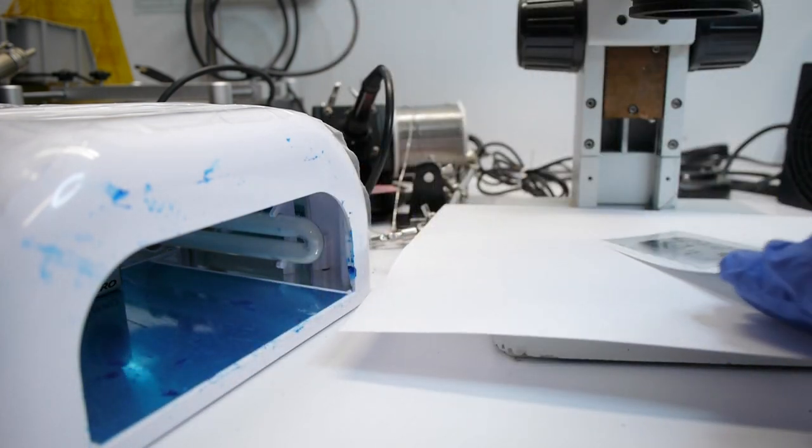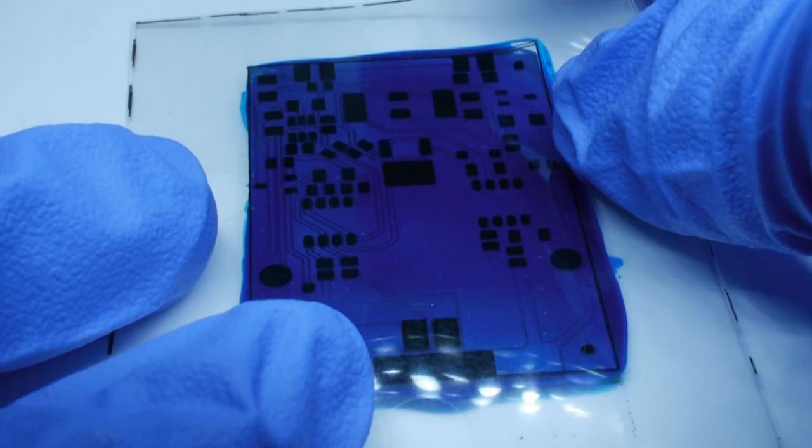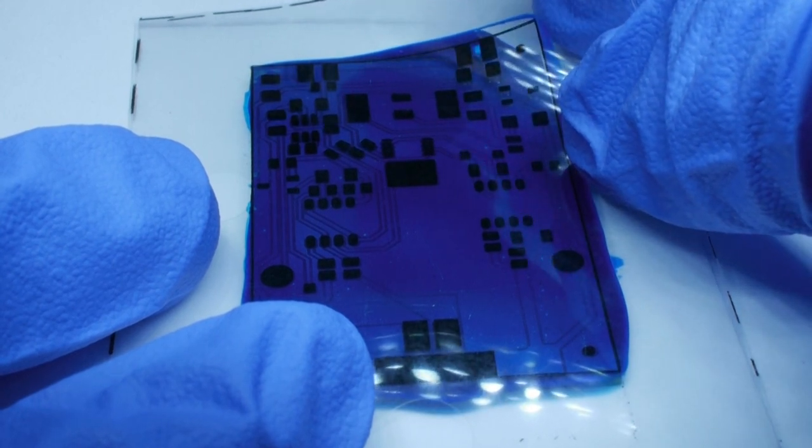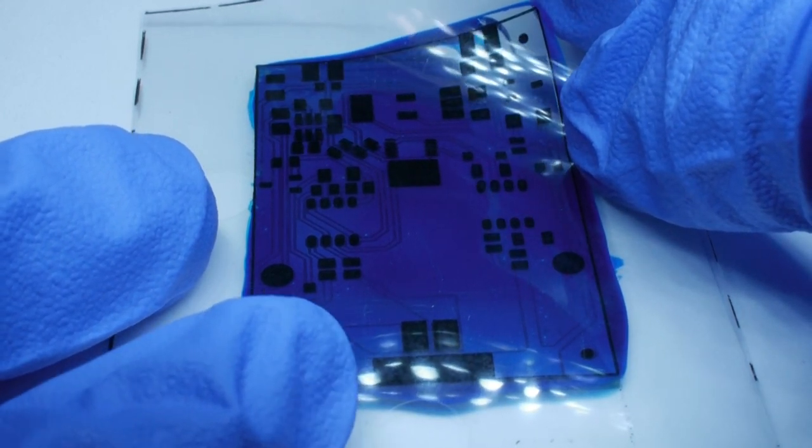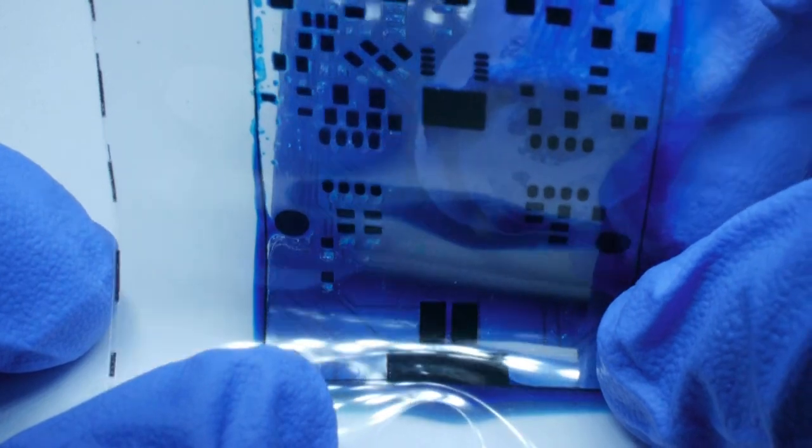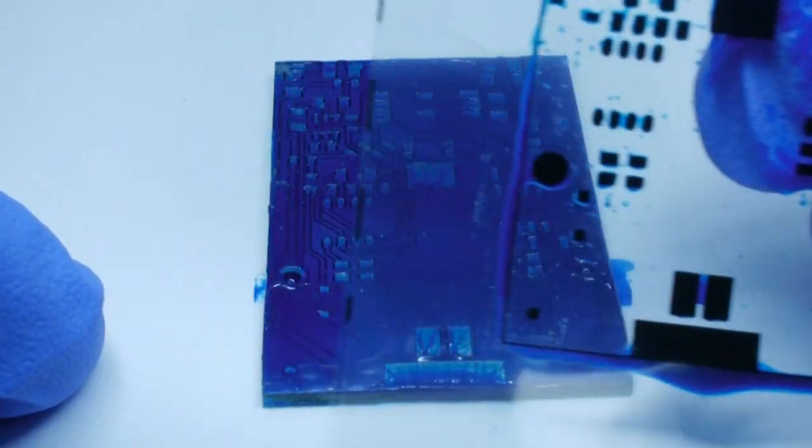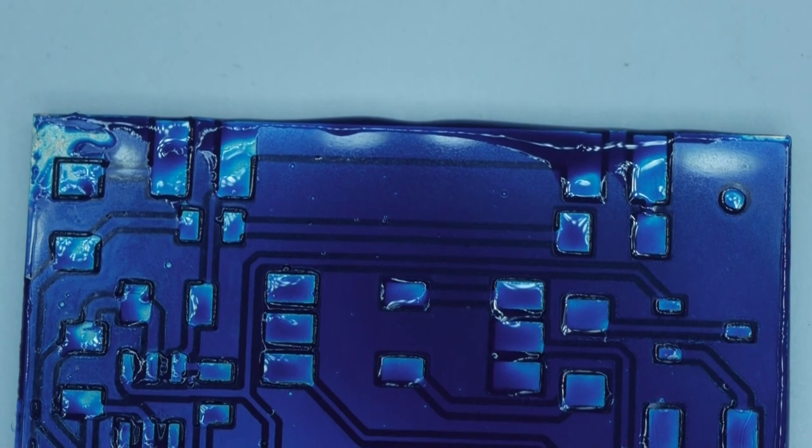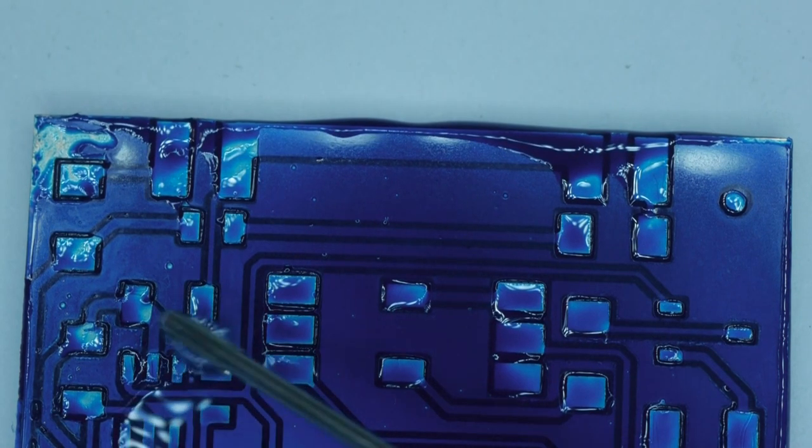Once it's finished curing, remove the transparency film and inspect the board. Then use alcohol to clean the uncured solder mask off the board.